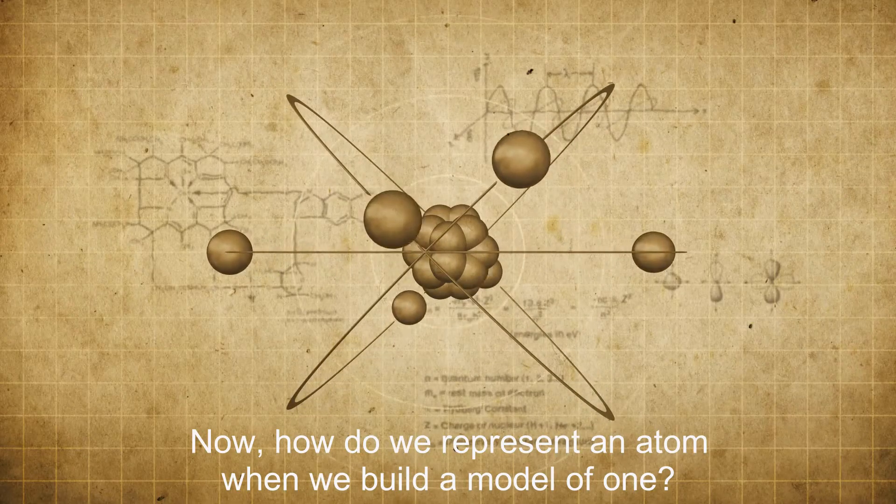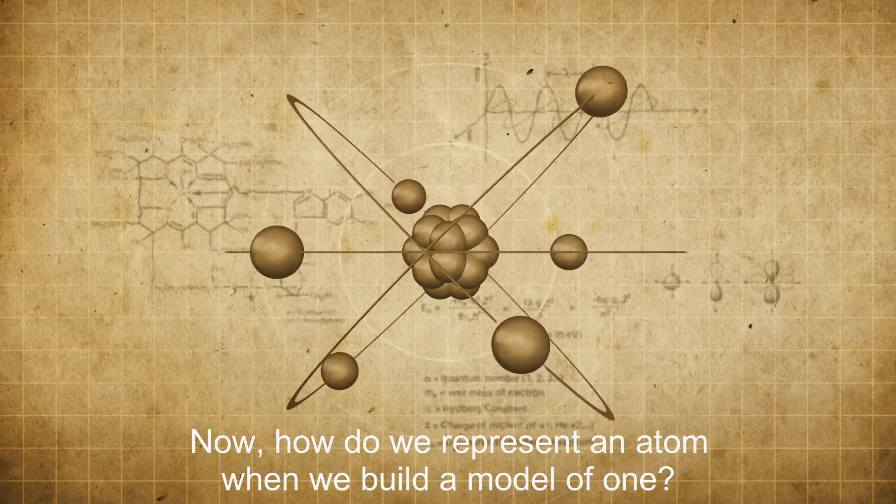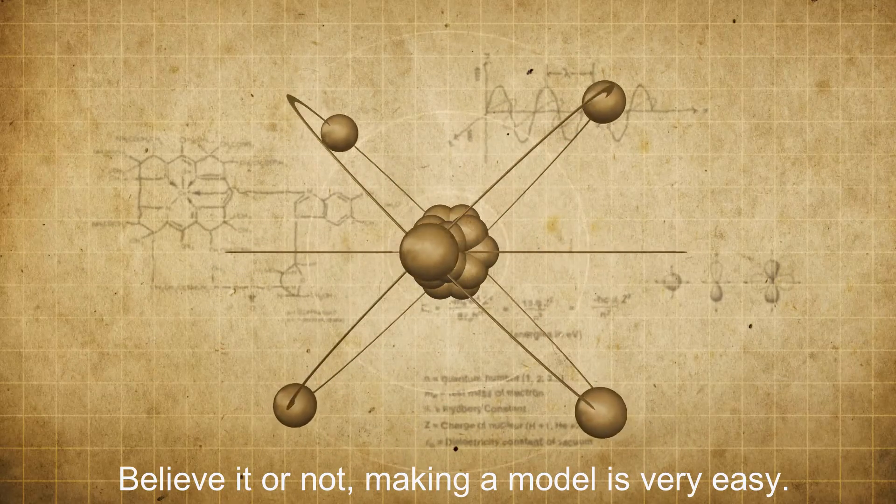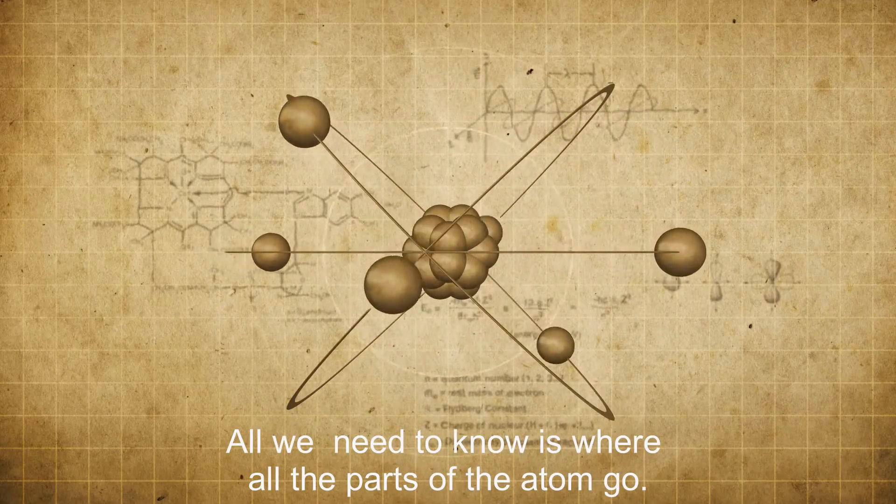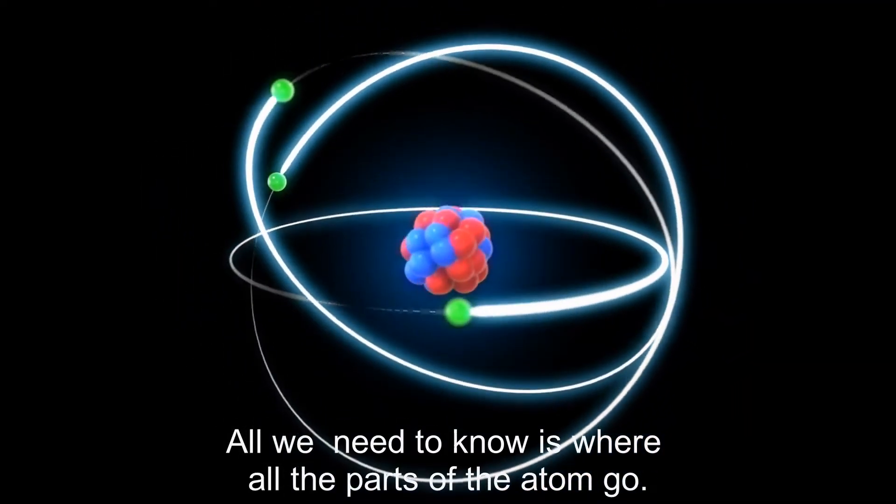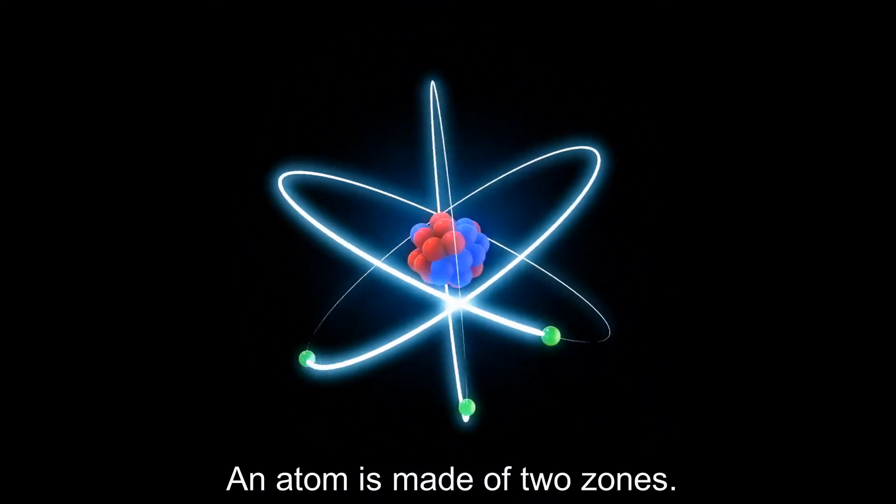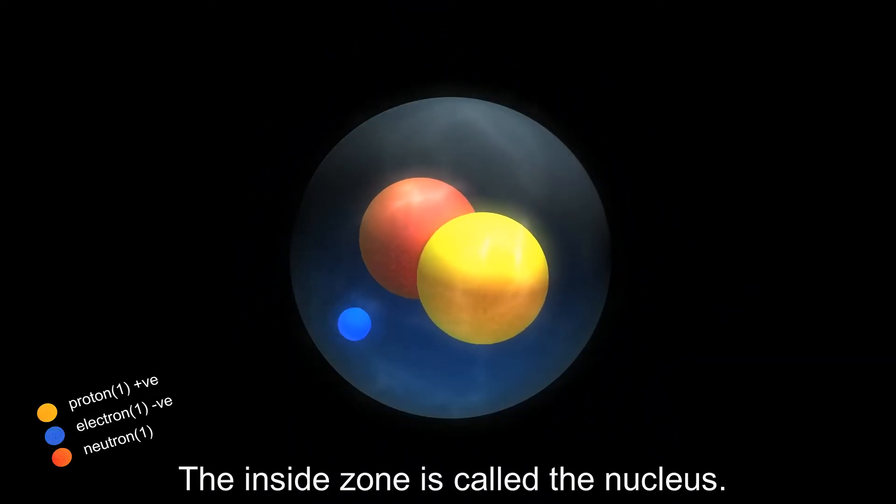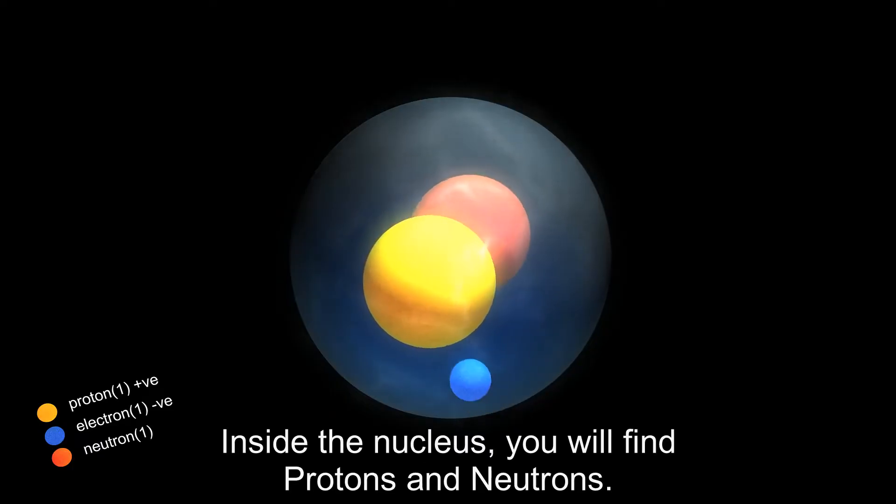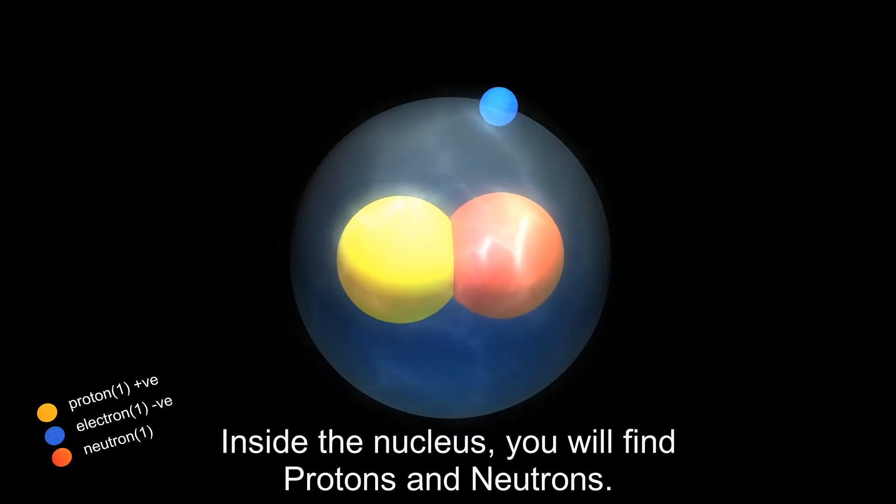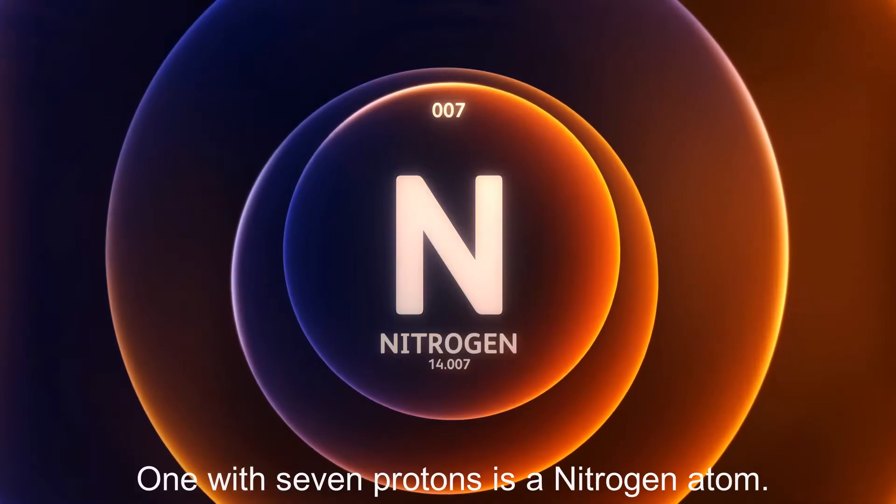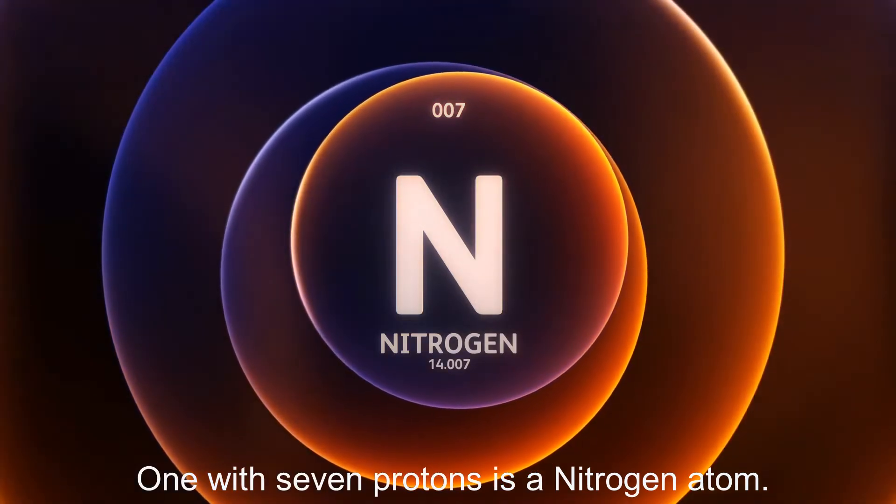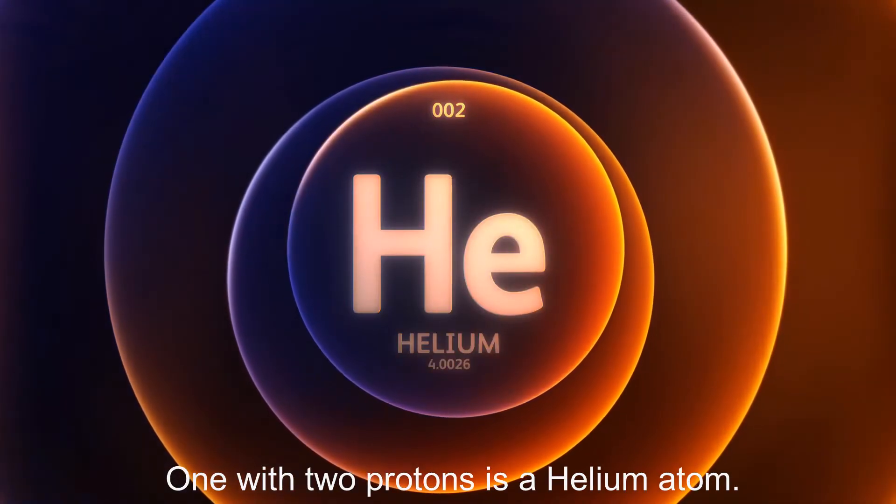Now, how do we represent an atom when we build a model of one? Believe it or not, making a model is very easy. All you need to know is where all the parts of the atom go. An atom is made of two zones. The inside zone is called the nucleus. Inside the nucleus, you will find protons and neutrons. The number of protons will determine what type of atom you have. One with seven protons is a nitrogen atom. One with two protons is a helium atom.